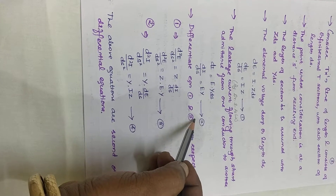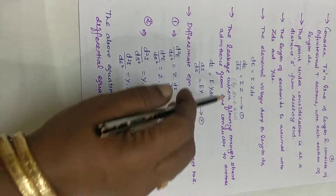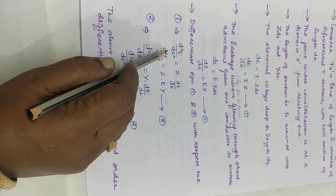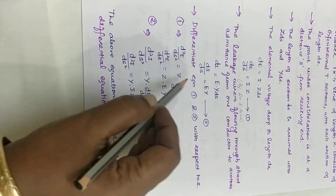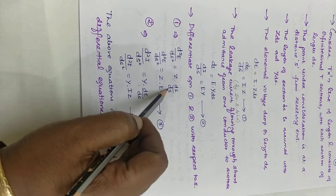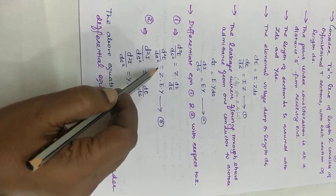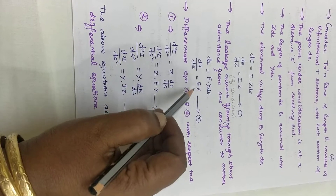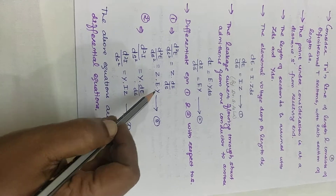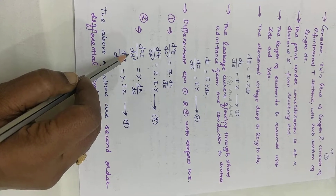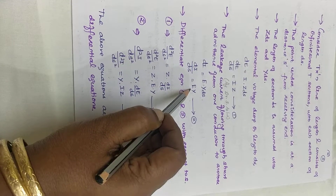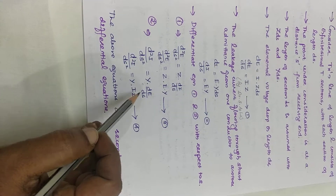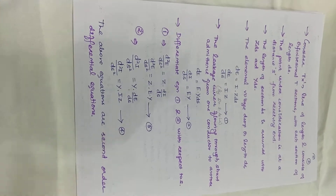Differentiate these two equations 1 and 2 with respect to S. So dE/dS becomes d²E/dS². Z remains constant, and I becomes dI/dS. So d²E/dS² equals Z into dI/dS, which is nothing but equal to EY. Similarly for d²I/dS², E is differentiated, Y is kept constant, and substituting dE/dS gives two second-order differential equations, labeled equations 3 and 4.